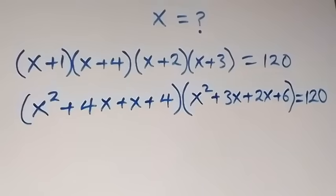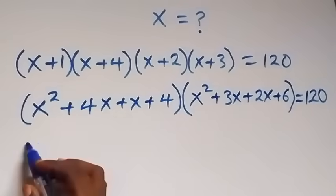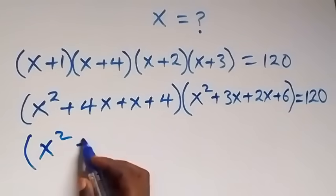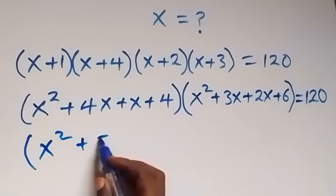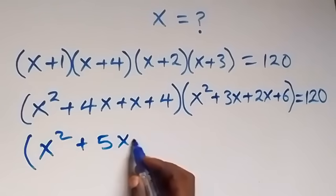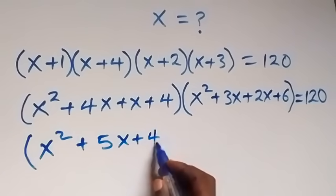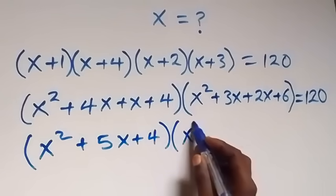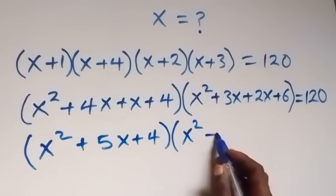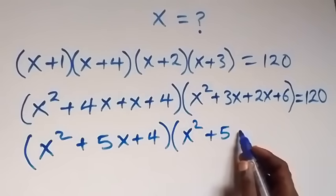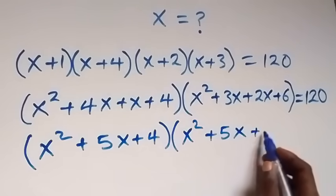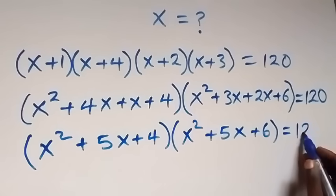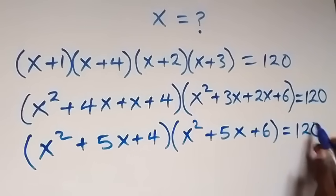From here we can simplify the brackets. This gives us x squared plus 5x plus 4 in the first bracket, and also x squared plus 5x plus 6 in the second bracket, now equals 120 on this side.